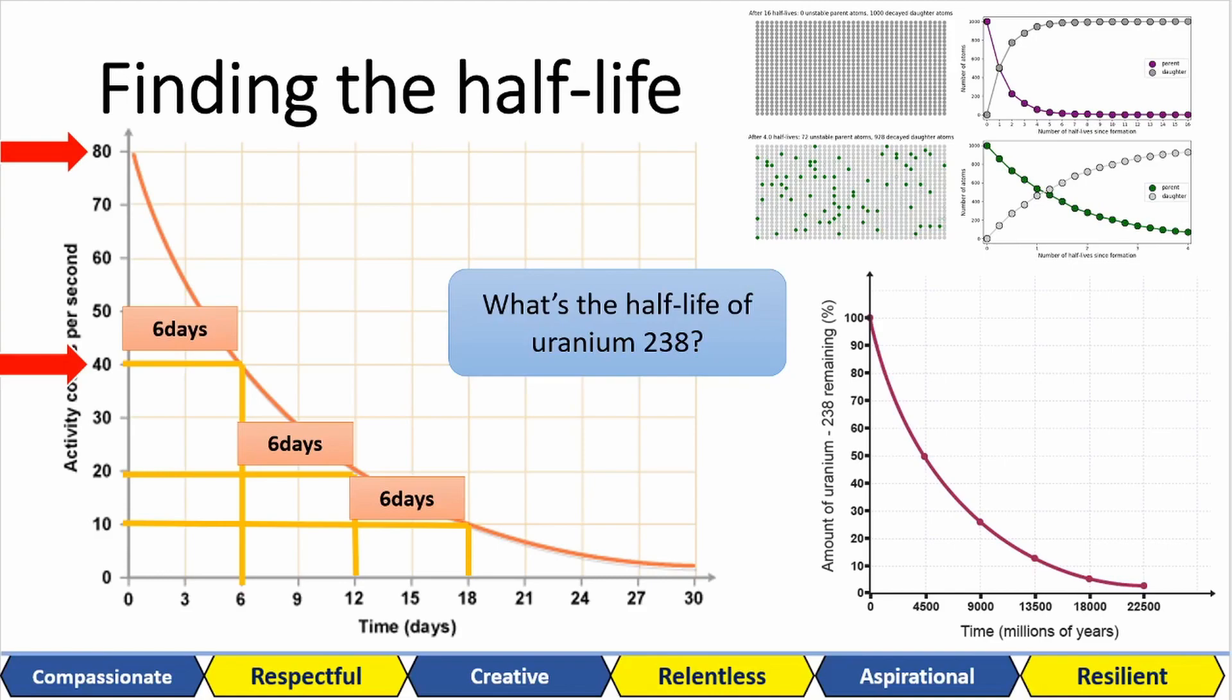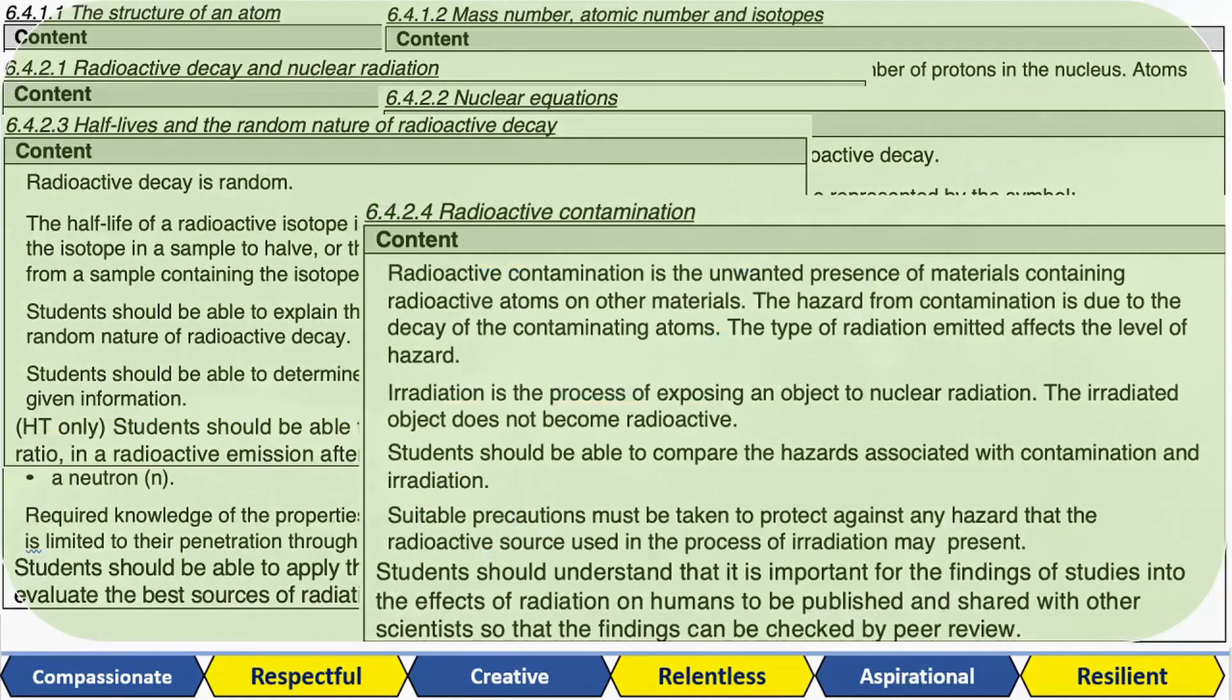See if you can use this technique to work out the half-life of uranium-238. Just like before, we look at the highest number, this is 100% at this point. We go to 50, intersect it with our curve and that gives us 4500 million years. And there we go. The mission is complete.